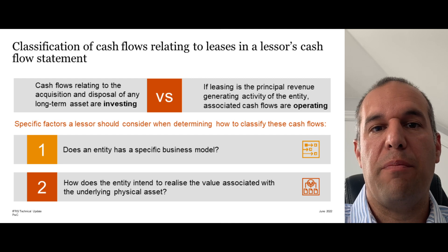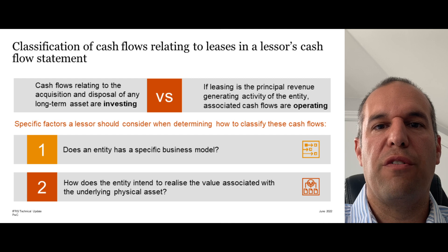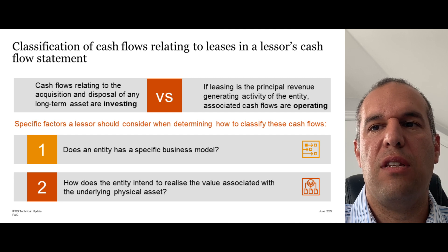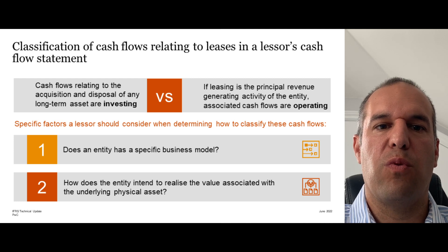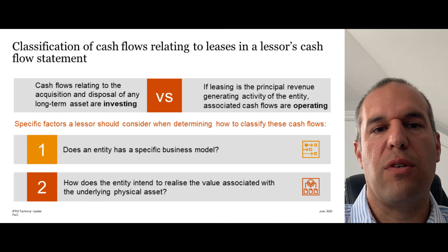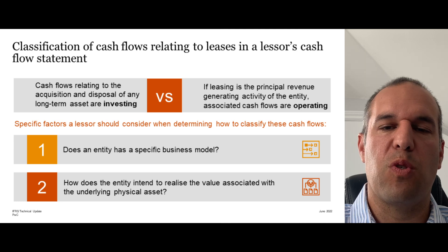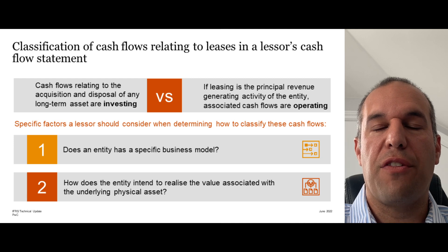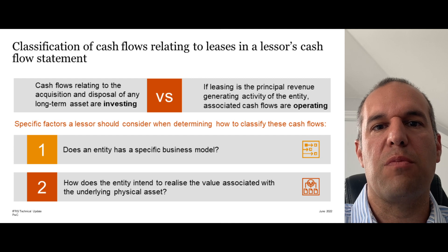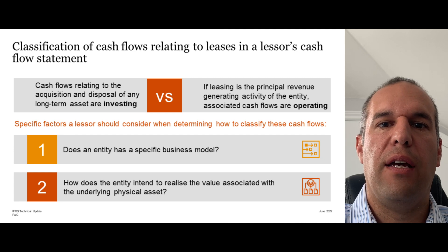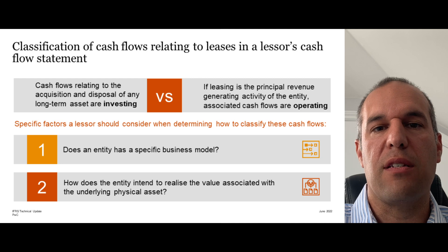If you think about a manufacturing lessor — one that effectively manufactures the asset with a business model to sell it via a finance lease — IAS 7 would say the cash outflows relating to that are actually operating, as well as the subsequent cash inflows. There's no hard and fast rule here, but it's worth acknowledging the conflict or contradiction in IAS 7 and thinking carefully about your facts and circumstances, your business model, and the way in which you monetize those assets.